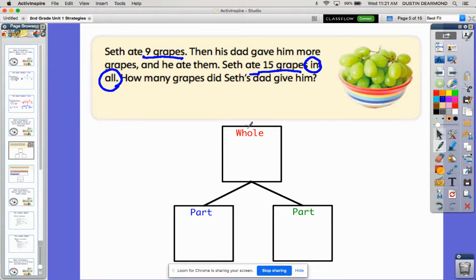Let's go back to our part, part, whole. You can open your eyes again. Let's think about our whole. Our whole was how many did he eat in all? He ate 15 grapes in all. So that's the total, and we're trying to figure out how to get to that whole.